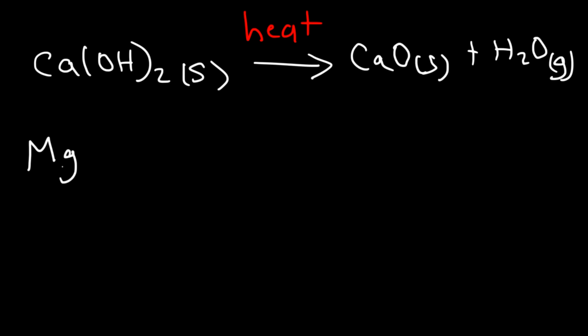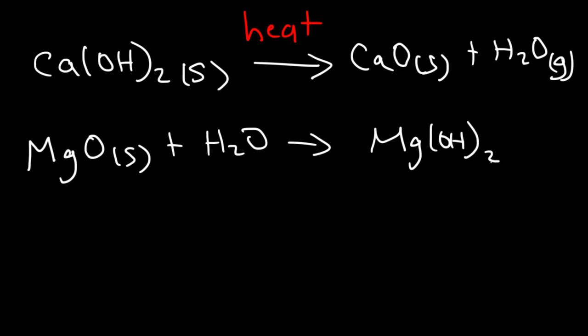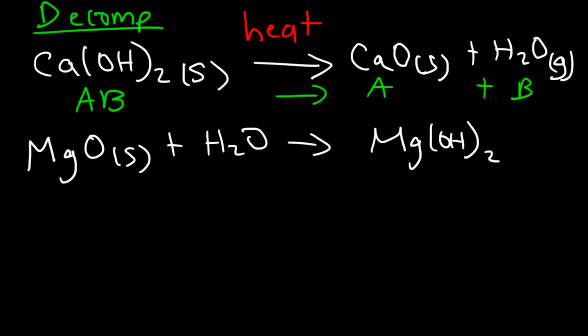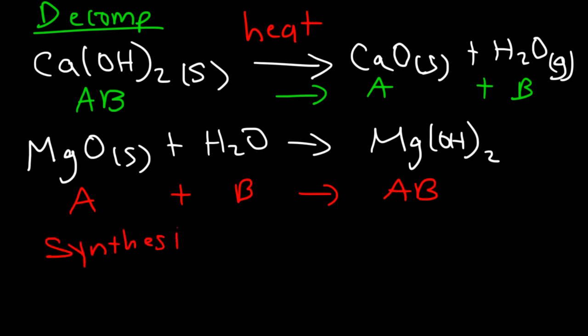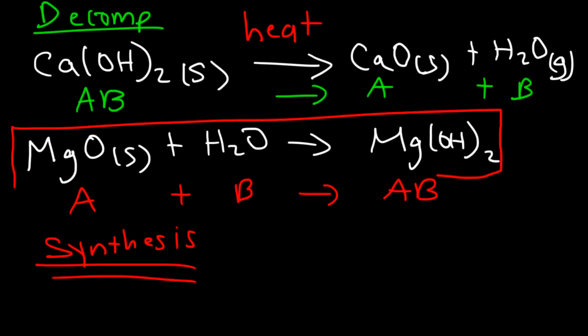Now consider the reverse reaction: if we react magnesium oxide with water, this can produce magnesium hydroxide. Looking at both reactions — calcium hydroxide breaking into calcium oxide and water is decomposition (AB → A + B), while magnesium oxide reacting with water to produce magnesium hydroxide is a synthesis reaction, with two compounds joining to form a larger compound.